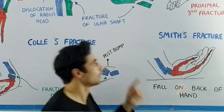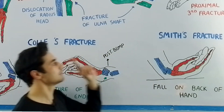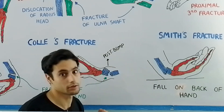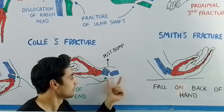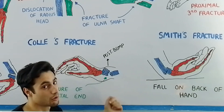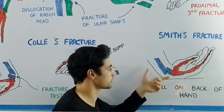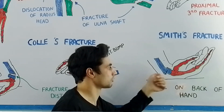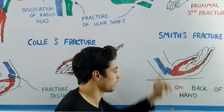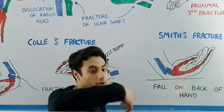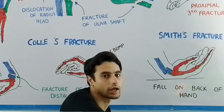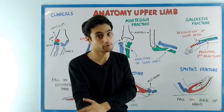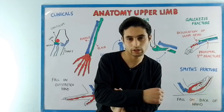In the case of Smith's fracture, the distal fragment is displaced ventrally — that is the key difference between Colles' and Smith's fractures. In Colles', the distal fragment is displaced dorsally; in Smith's, it is displaced ventrally. This fracture happens when a person falls on the back of the hand. This was all about the clinicals of the forearm bones, and I will see you in the next video.